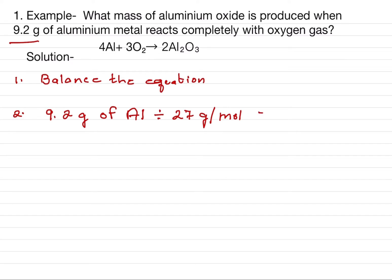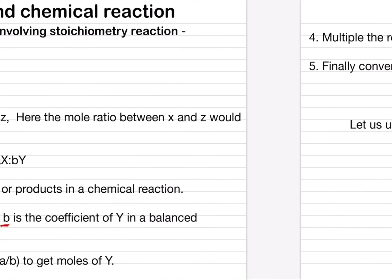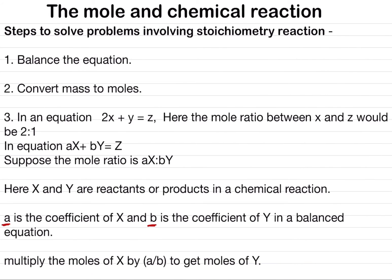Dividing 9.2 by 27 gives us 0.34 moles. So we have converted mass to moles and now know the moles of aluminium. Moving to step three, we have to define the values — what is X, what is Y, and what are a and b.